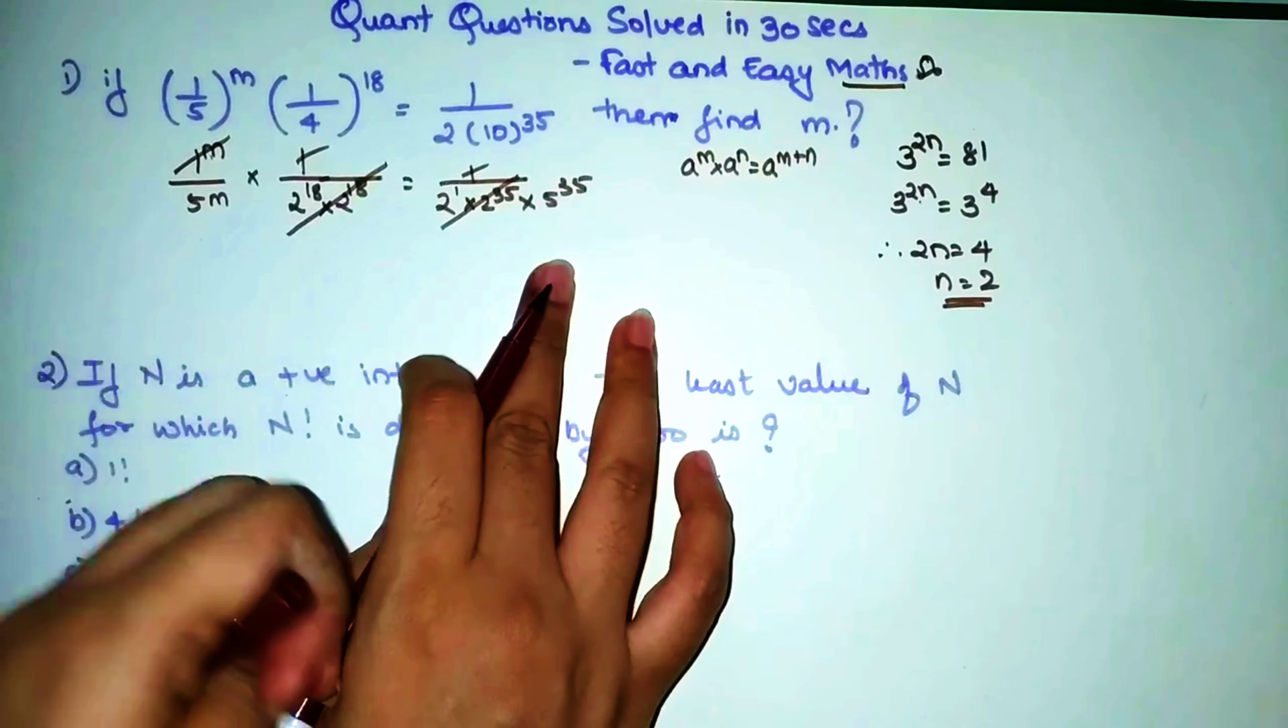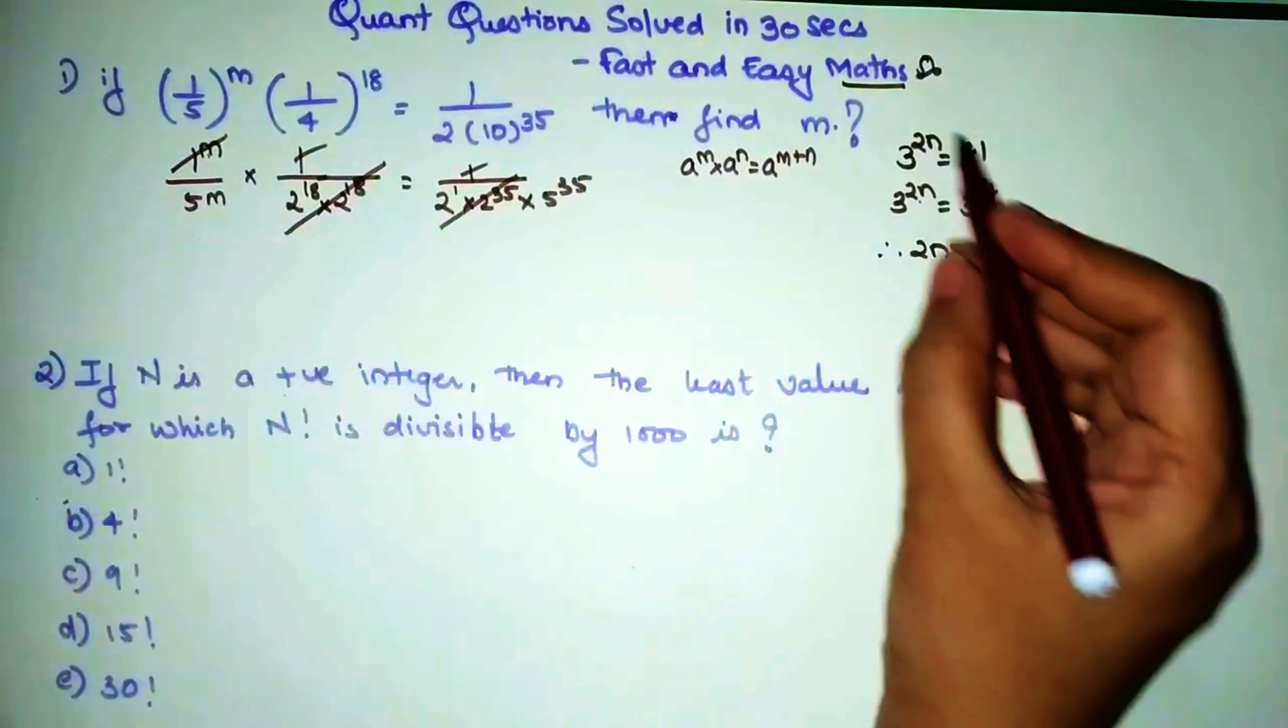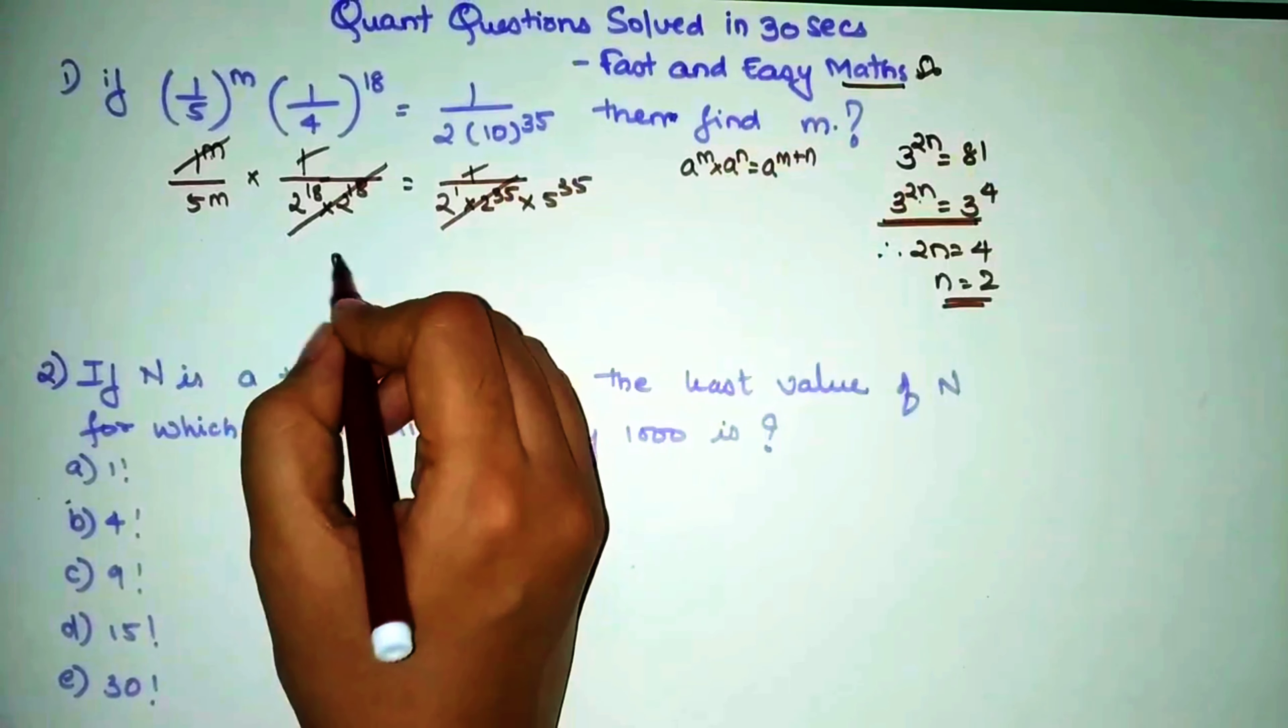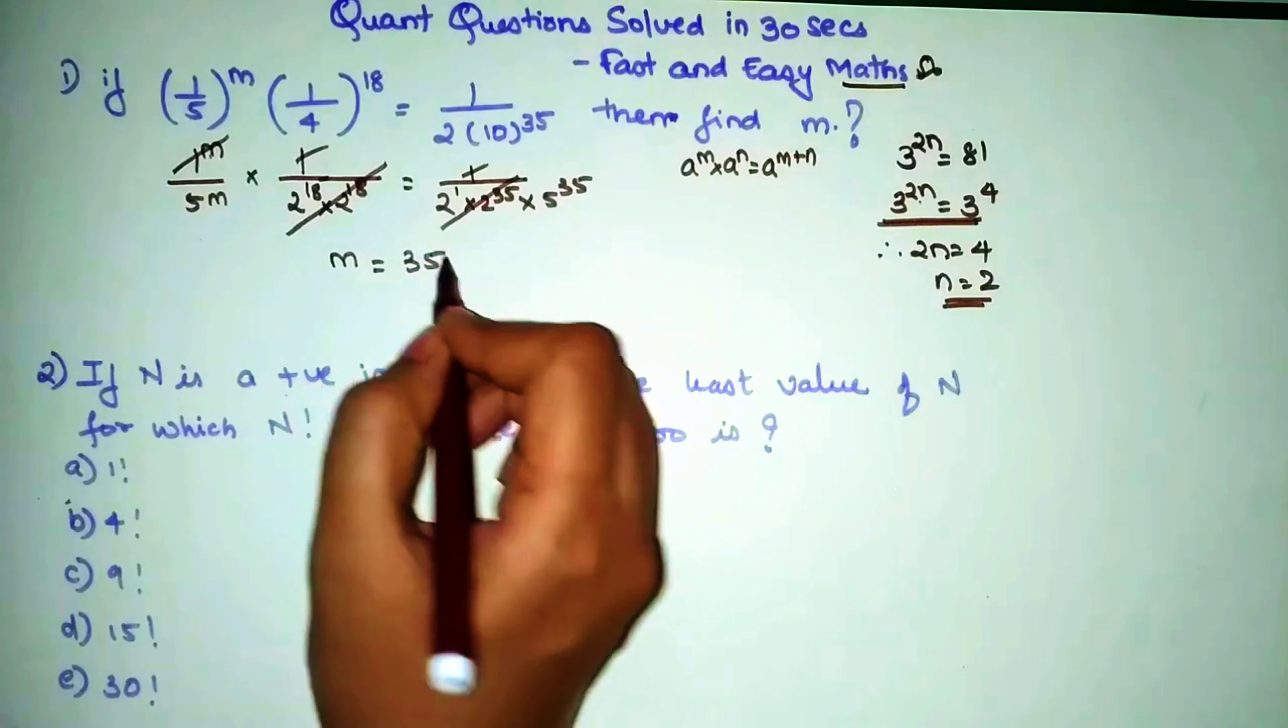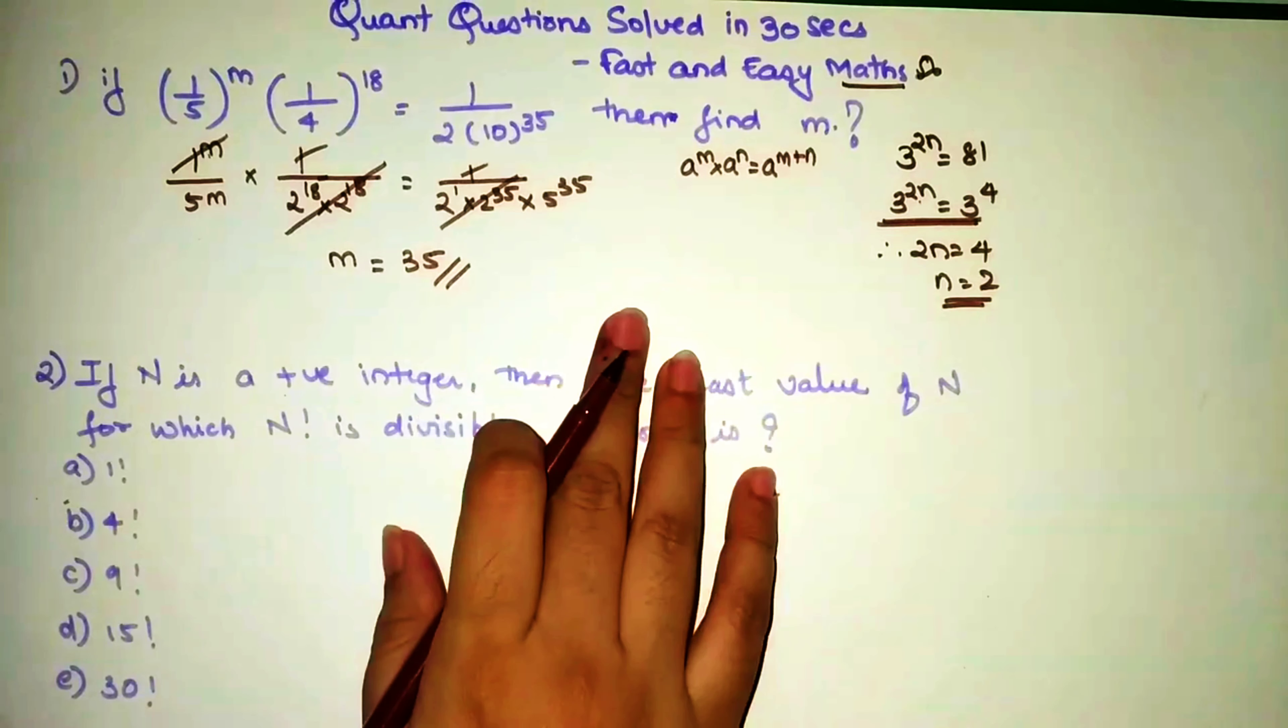And this is also 2 raised to 36, I can directly strike that out. And 1 raised to anything will always be 1. So now what you're left with is 5 raised to m which equals 5 raised to 35. So now can I directly say, using this particular logic, since the bases are same, that m is 35.